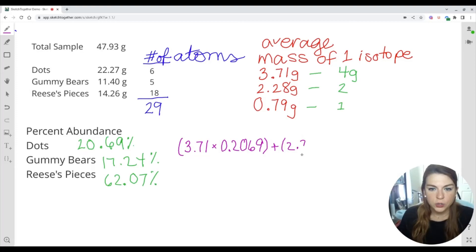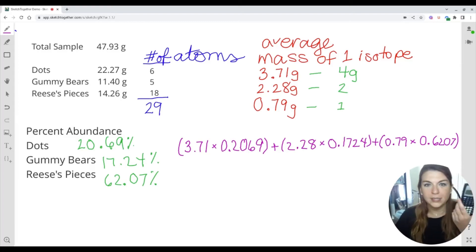And then I'm going to add that to the data for the gummy bear. Average mass of a gummy bear was 2.28, and we will multiply that by the percent abundance converted into a decimal, so that's 0.1724. Sorry about the handwriting. And then finally, we have the Reese's Pieces, which averaged 0.79 times its percent abundance written as a decimal: 0.6207. I'm just going to fit it.